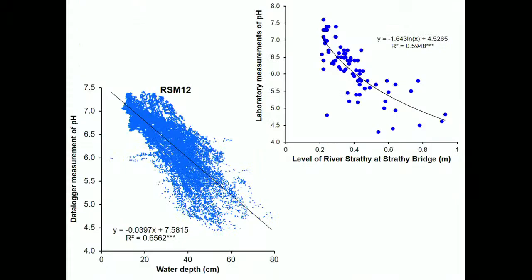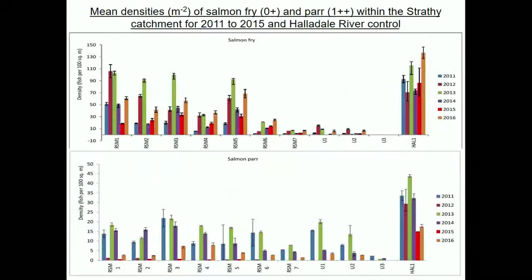There appear to be more acid events in the winter of 2014–15. The continuous monitoring equipment generates a huge amount of data. Looking at salmon densities for each year across a number of locations, there are quite significant inter-annual variations in the populations, which might be regarded as fairly typical population fluctuations.